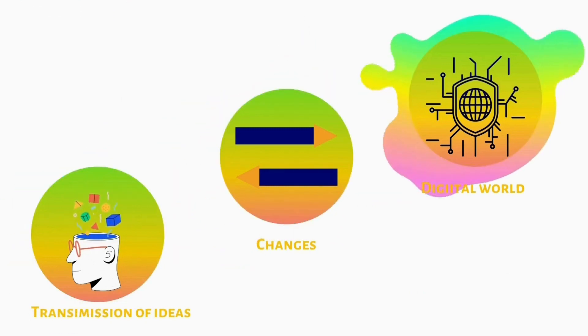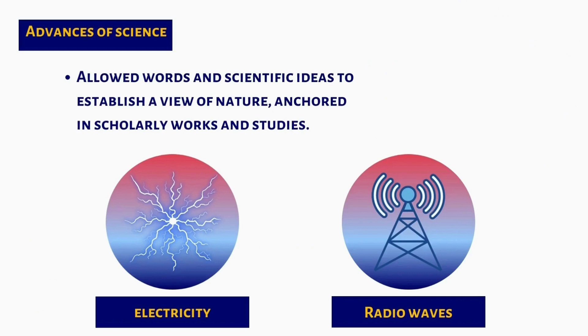The digital world is a direct offspring of the progressing world of technology built upon the many advances of science. This technological invention allowed words and scientific ideas to establish a view of nature anchored in scholarly works and studies. Such as new discoveries on the phenomenon of electricity which were eagerly absorbed by fellow scientists who then utilized the science to create upper technological products. For example, radio waves were built upon wave nature of electricity and the mechanism to come up with the television and etc.